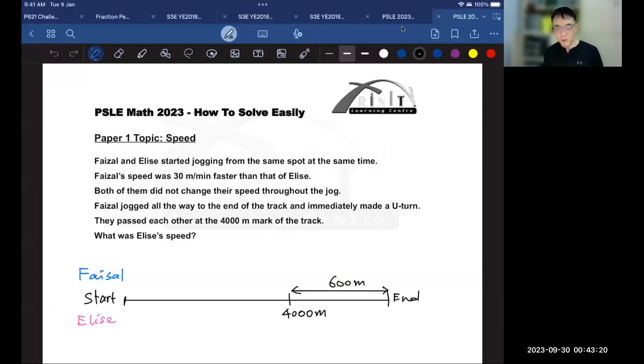The first thing to do in any question is to highlight the keywords. So let's begin to highlight the keywords. Now, the keywords are Faisal and Elise started jogging from the same spot at the same time. Faisal's speed was 30 meters per minute faster than Elise.